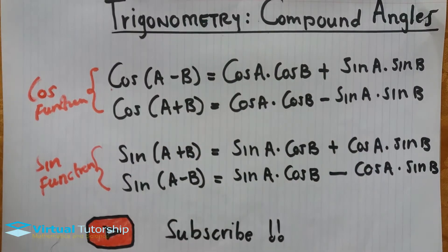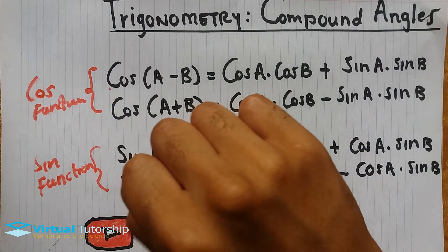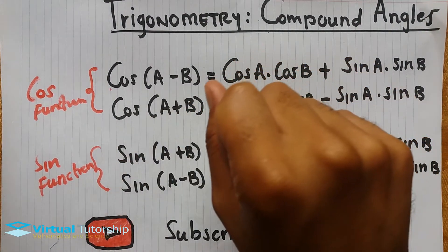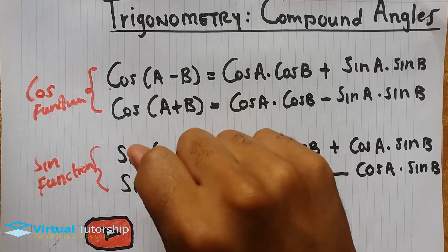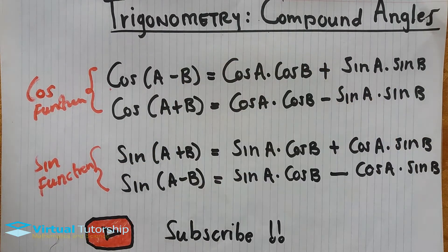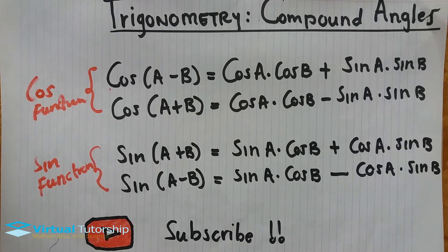Compound angles occur when you subtract or add any two angles.